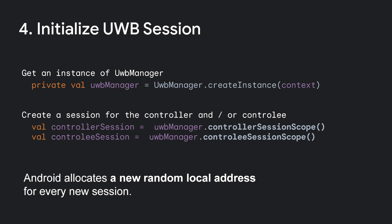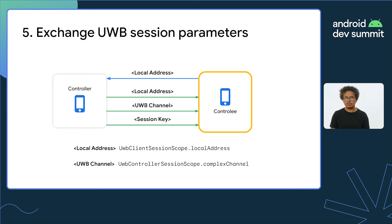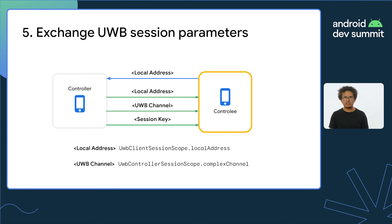Once discovery is complete and you capture the required information from each device, you need to initialize your session by getting an instance of UWB manager and then call controller session scope on the controller or controlee session scope on the controlee. Keep in mind that Android allocates a new random address for every new session, so this needs to happen before you exchange parameters with your UWB peers. After the sessions are initialized, you have to exchange your device parameters. Controller and controlee exchange their local addresses, which on Android can be obtained from the corresponding session scope objects. For accessories, it should be provided by the vendor. The controller also needs to share the UWB channel, which on Android is automatically generated and can be retrieved from the UWB controller session scope object.